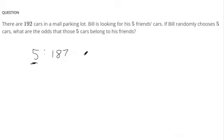Same thing with this car problem. There's five cars that meet the criteria of belonging to his friends, and then you compare that to the 187 other cars that do not belong to his friends. So that's the odds ratio - picking five cars, having them all belong to his friends.